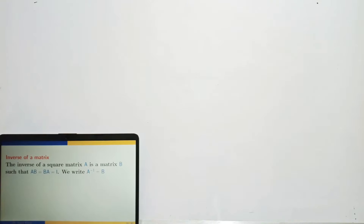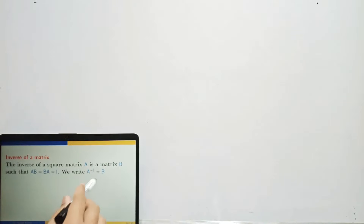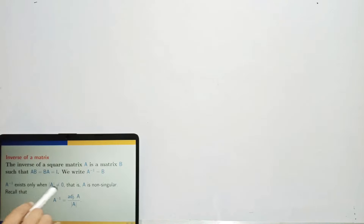Next: inverse of a matrix. The inverse of a square matrix A is a matrix B such that AB = BA = I, the identity matrix of the same order. We write A⁻¹ = B. A⁻¹ exists only when det(A) ≠ 0, i.e., A is non-singular, and A⁻¹ = adj(A) / det(A). But we won't use this method here.